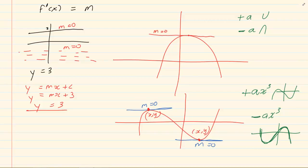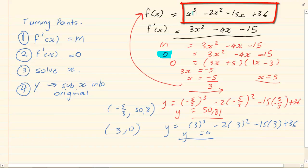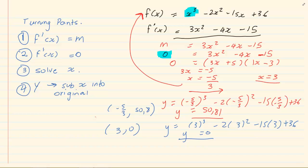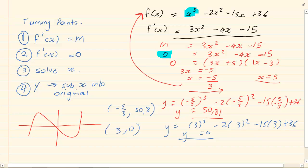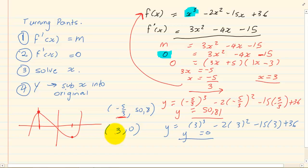Now why would that be important? This equation has a positive leading coefficient. So a positive graph means I'm going sad and then happy. The top turning point — the maximum turning point — is on the low x value, and the minimum turning point is on the high x value. From our two x values, minus 5 over 3 is lower than 3, which means at minus 5 over 3 the turning point is a maximum. And at the higher x value of 3, it's going to be the minimum.